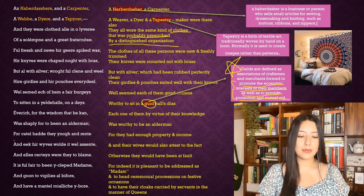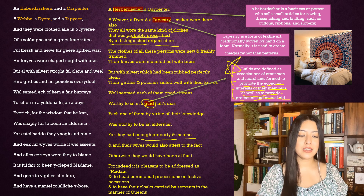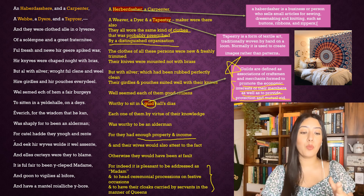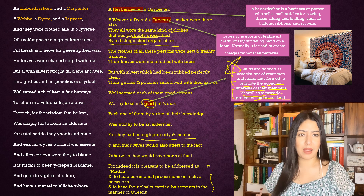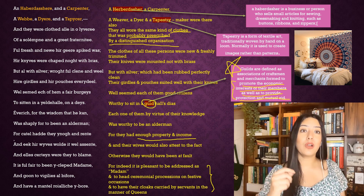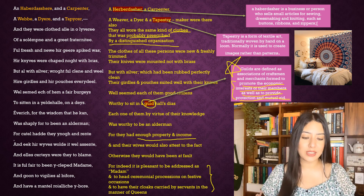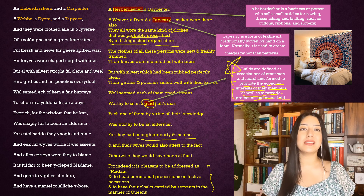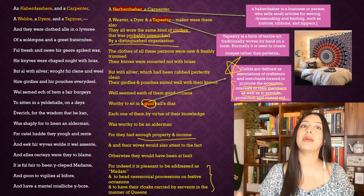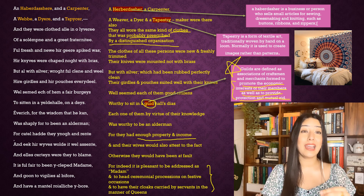Each one of them, by virtue of their knowledge, was worthy to be an alderman, for they had enough property and income. Their wives would also attest to that fact — indeed it is pleasant to be addressed as 'madam.' Because these people had a lot of wealth and income, their wives were really proud. They would be called madam wherever they went, head ceremonial processions on festive occasions, and have their cloaks carried by servants in the manner of queens. This is the influence of the guildsmen — their money and income gave even their wives the princess treatment.